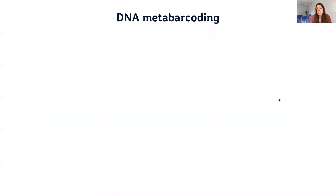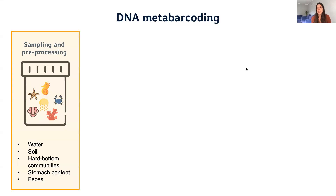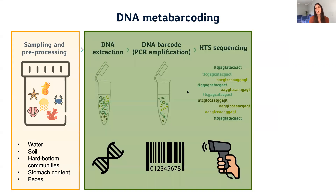With a technique known as DNA metabarcoding, we are able to do that. We start with a water sample, but it's not limited to water — it can be a soil or hard bottom communities, stomach contents, or even feces. Then we bring those samples to the lab to extract all the genomic DNA from those organisms, and also select a barcode, which is a common region in the DNA across all the species.